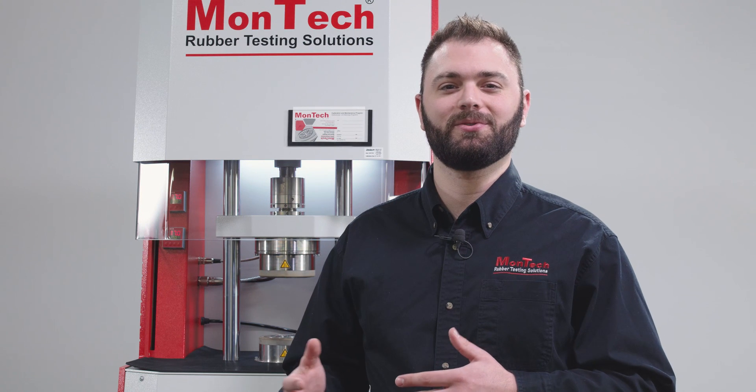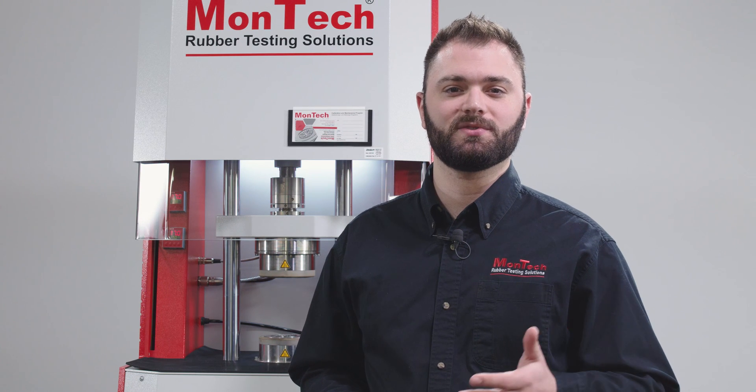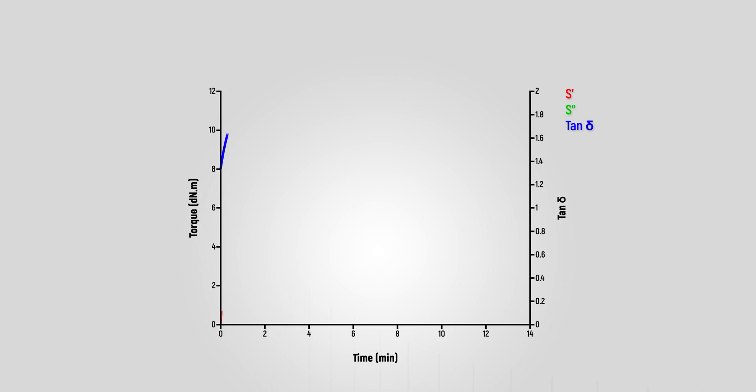The MDR also records the torque value at zero strain amplitude, which is called S''. S'' indicates the viscous response of the material. The values for S' and S'' can be used to calculate what is called the tan delta value.